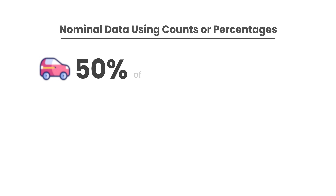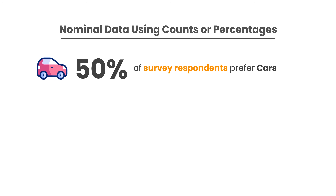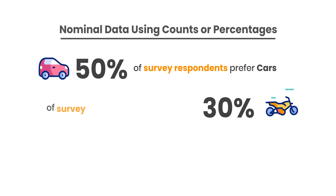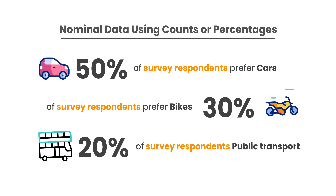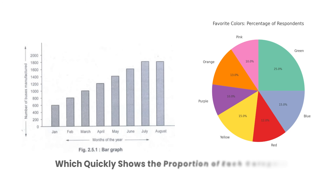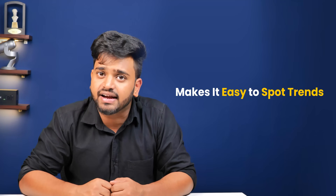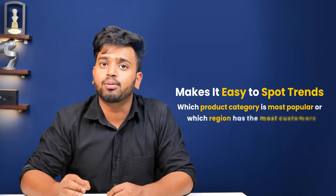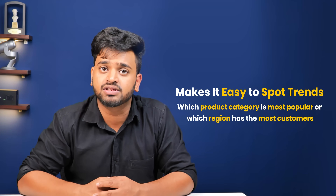For example, you might say that 50% of survey respondents prefer cars, 30% prefer bikes, and 20% prefer public transport. You can also use nominal data to classify customers by region, product category, or subscription type. Graphically, the best way to represent nominal data is through a bar chart or a pie chart, which quickly shows the proportion of each category, making it easy to spot trends like which product category is most popular or which region has the most customers.